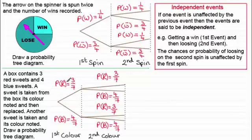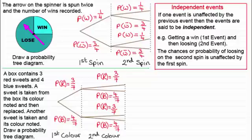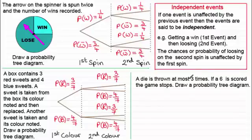If we didn't put the red sweet back in the box, this probability would change — it would become two red sweets out of a total of six, giving two sixths. That would not be an independent probability; its probability has changed because it's affected by what went before. But we'll be looking at that later and the notation would have to change. I've got another example here — a die is thrown at most three times and if a six is scored the game stops. We've got to draw a probability tree diagram. If you watched the previous video you might want to draw that tree diagram again and put the probabilities in.